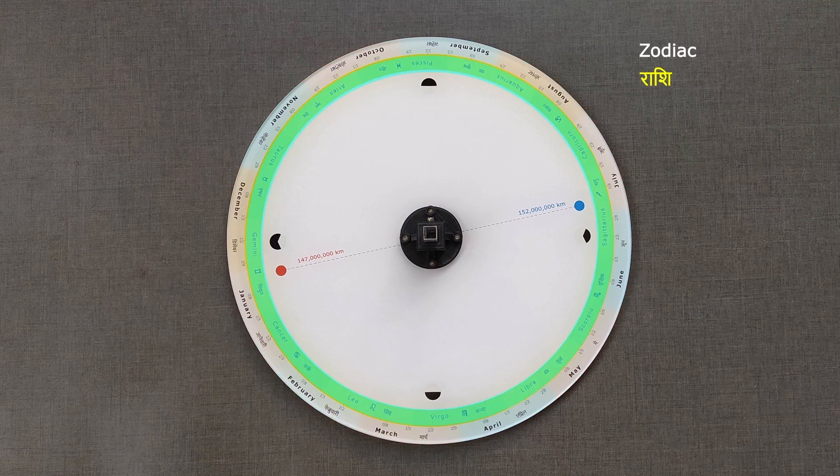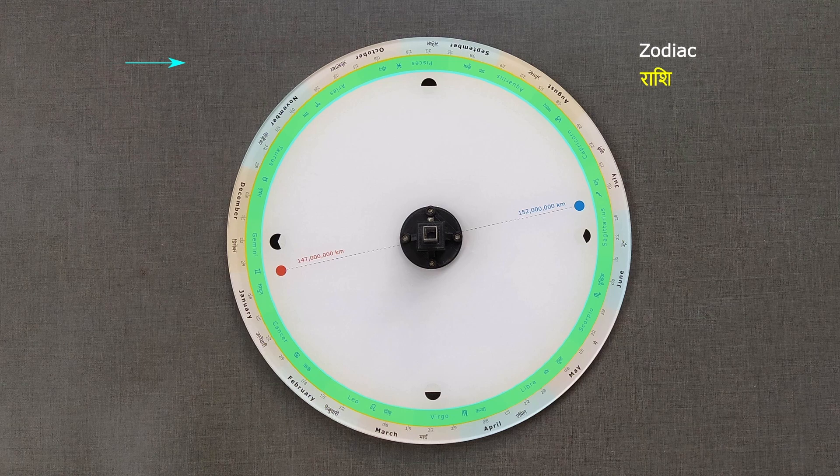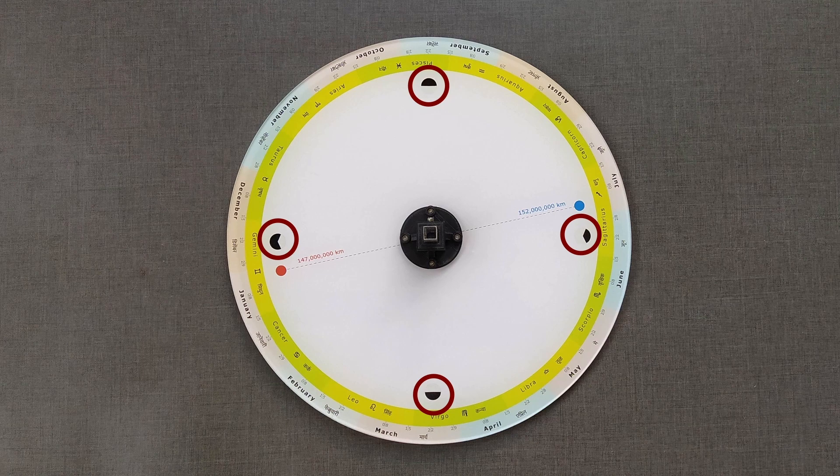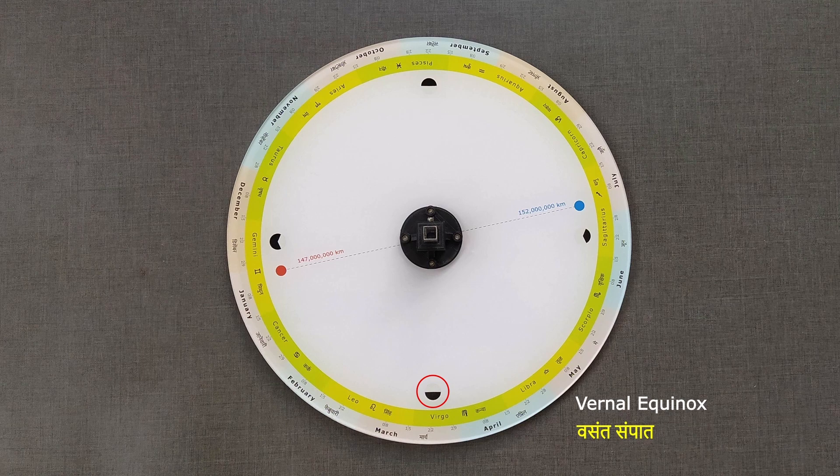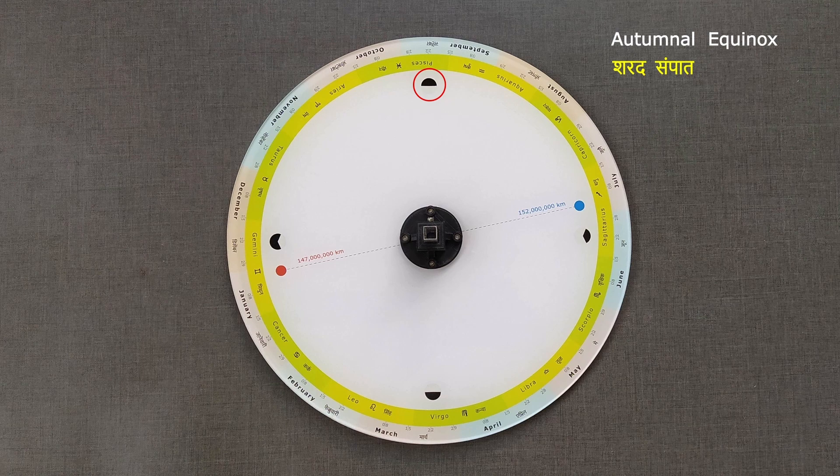Inner circle has names of the zodiac signs. Aries starts from here. Four key events are marked with these icons, two equinoxes and two solstices. This location marks the vernal equinox which happens around 21st of March and the autumnal equinox which happens around 22nd of September.